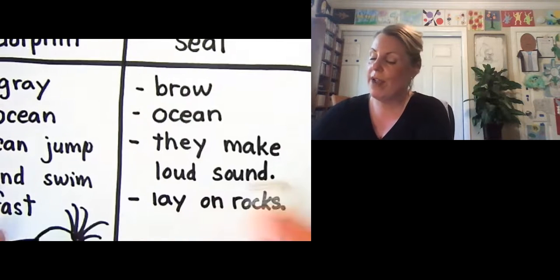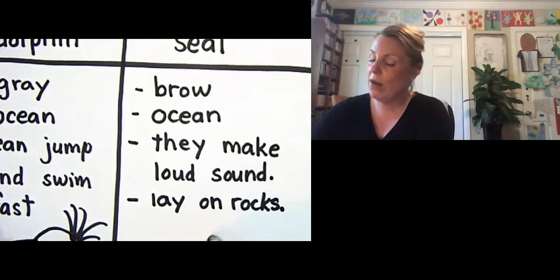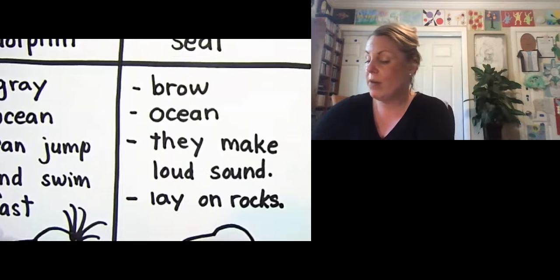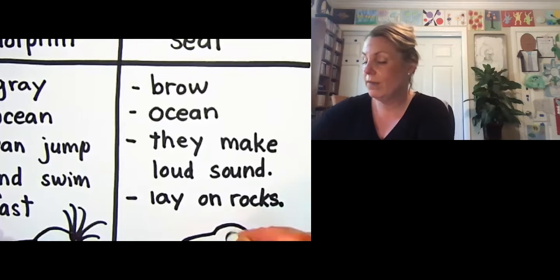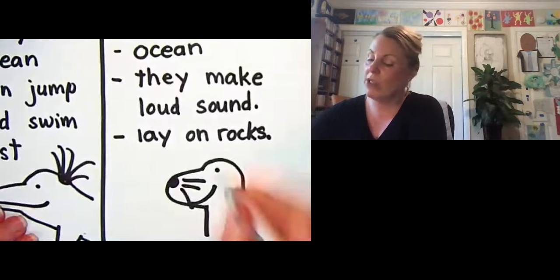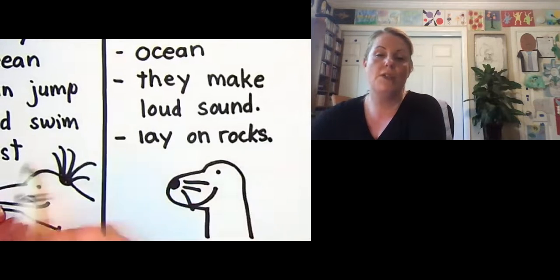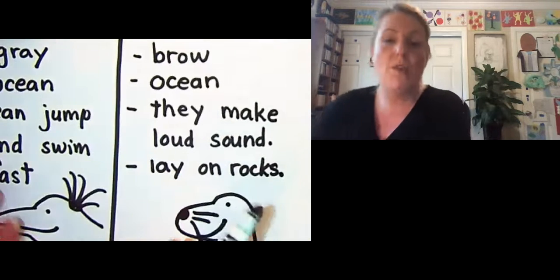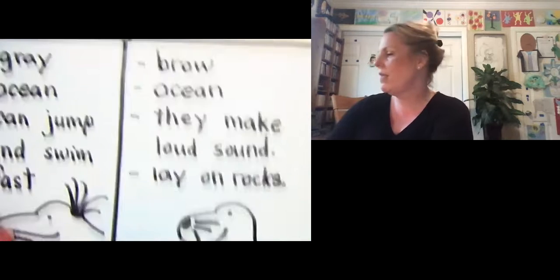And you're gonna go ahead and you're gonna draw two different animals. It doesn't need to be the same as me. You can just try your best. And my seal is gonna be smiling too. So we're gonna try our best. You're gonna think of two animals. You're gonna think of three things about each one of those animals. We're gonna use this for our writing. So this is our brainstorm today.